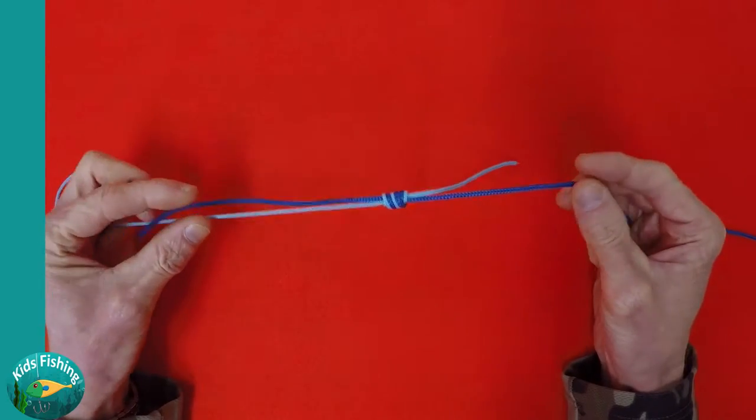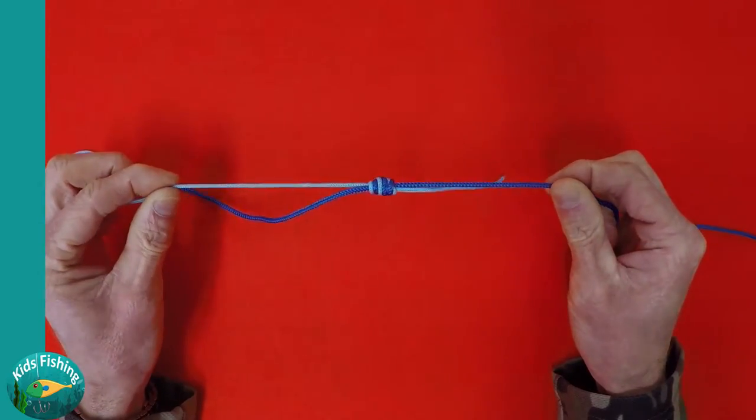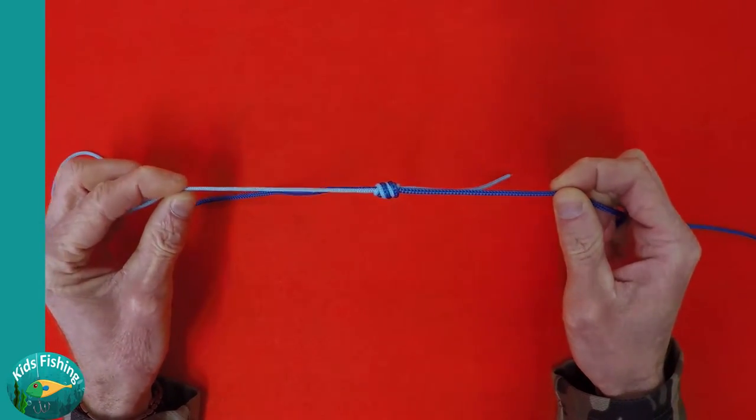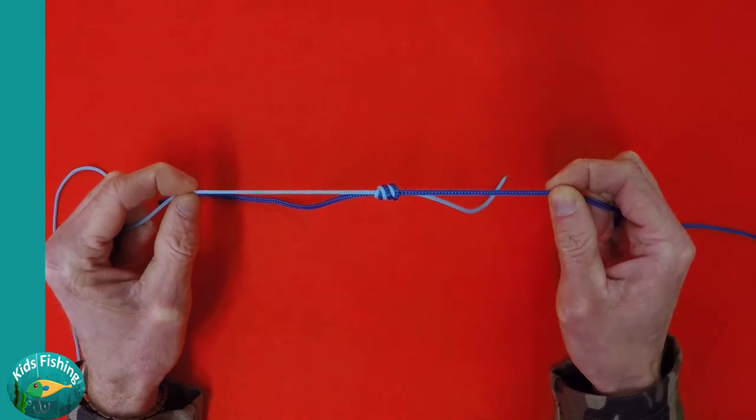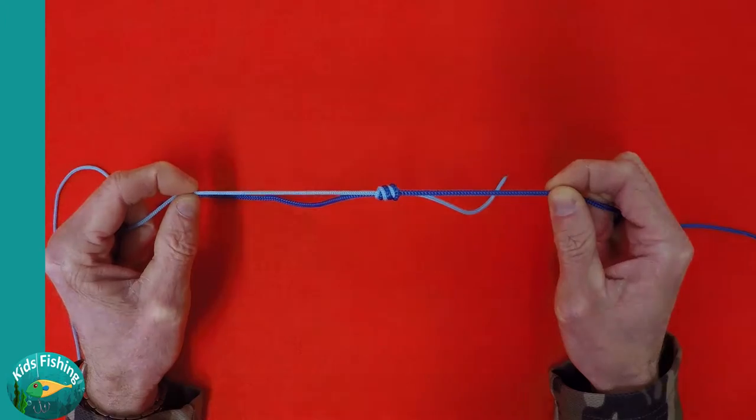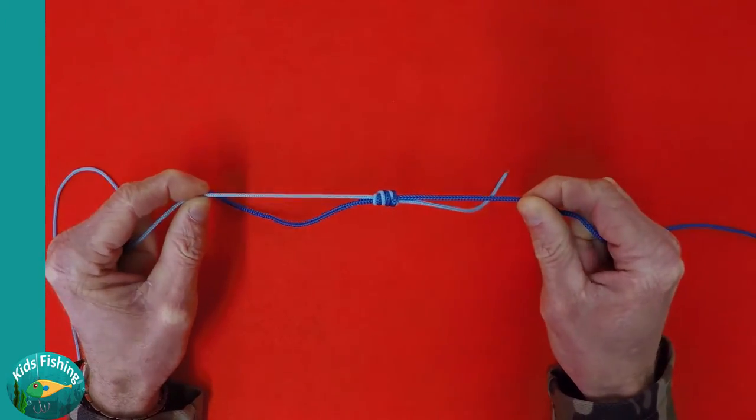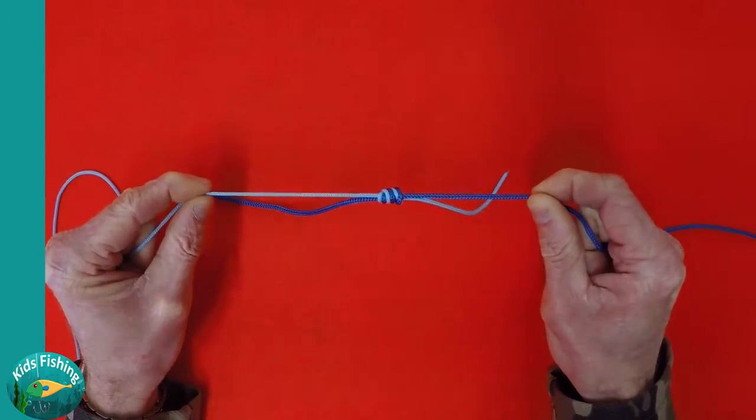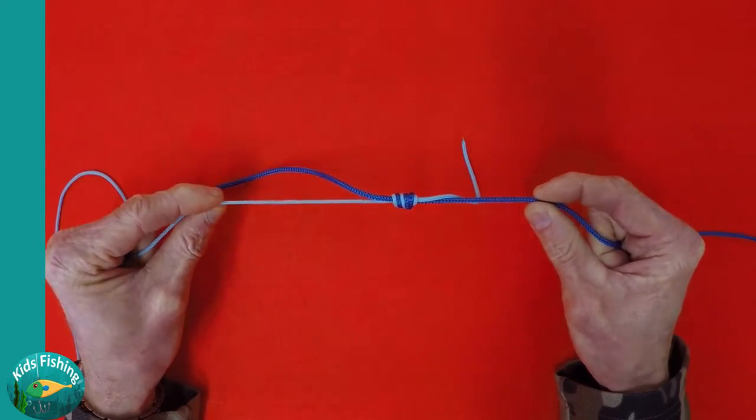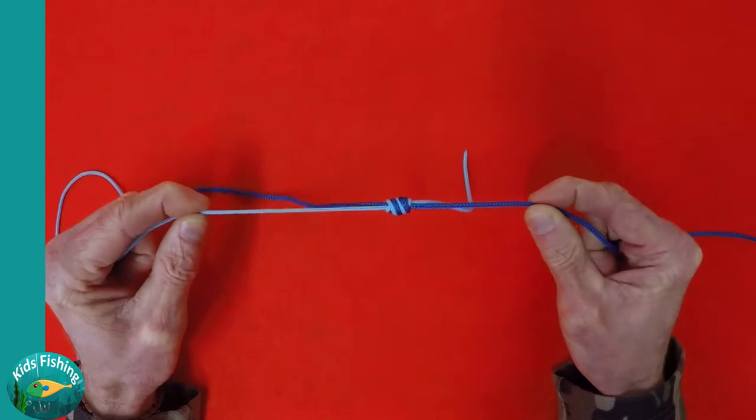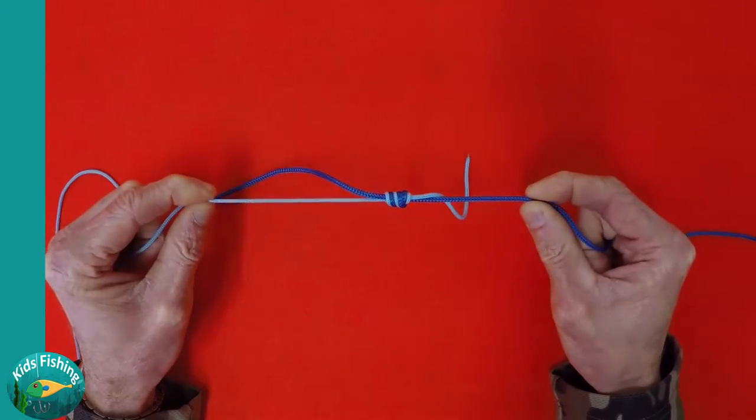The great thing about this knot is that it allows you to join different types of line together, so whether that's braid to nylon or braid to fluorocarbon or fluorocarbon to monofilament nylon or two different types of nylon. It might be a thicker nylon and a thinner nylon you want to join together. This is a very versatile knot and it's relatively easy to learn.